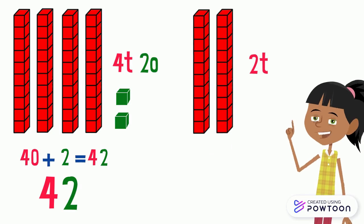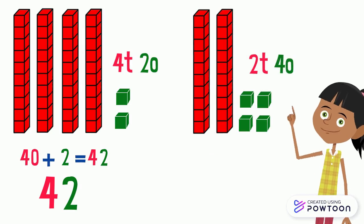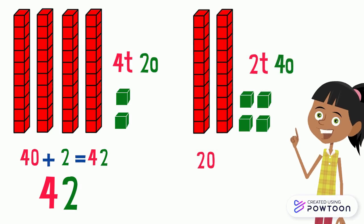We also have 2 tens and 4 ones. 2 tens equals 20, 4 ones equals 4. 20 plus 4 equals 24. So this number is 24.